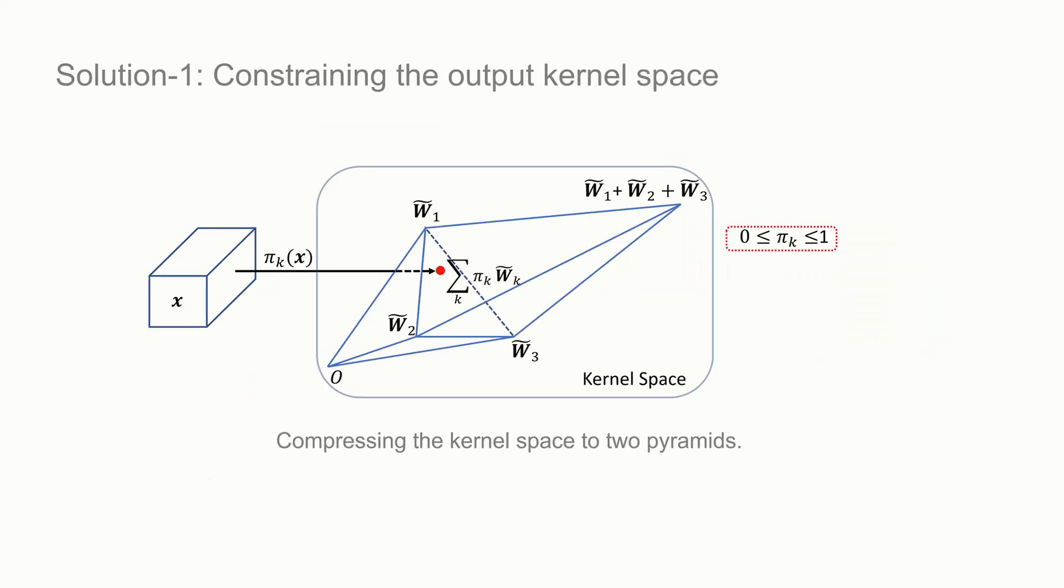To address these issues, we constrain the space for the aggregated kernel. First, we let the attention value between 0 and 1. Here we have three kernels. The output is constrained in two pyramids. Next, we let attention sum to 1. Thus, the output space is further compressed to a triangle. The red dashed line is normalized to a point on the triangle. The reduction of the output space facilitates the learning of attention function π(x).